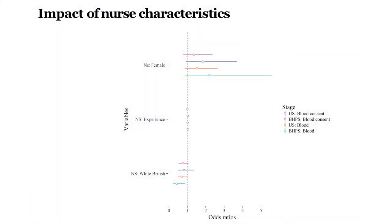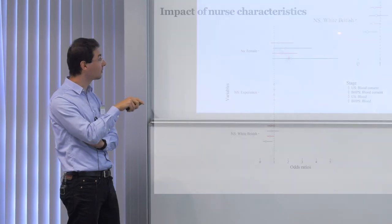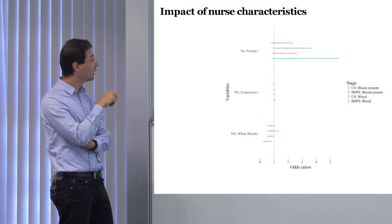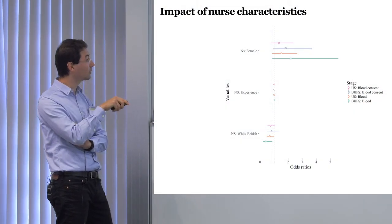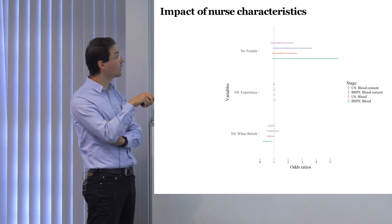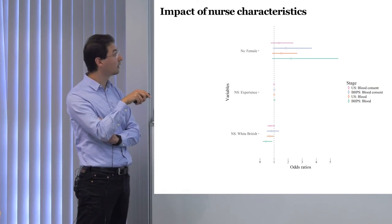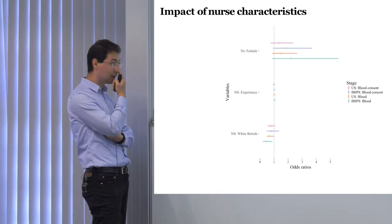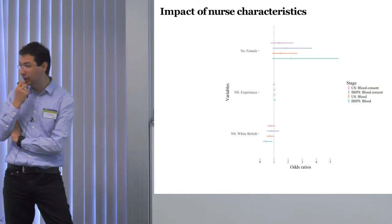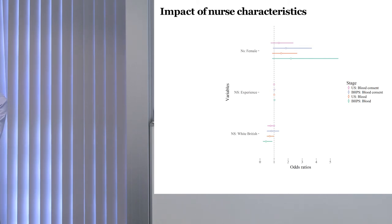Looking at nurse characteristics for blood consent and blood collection in Understanding Society and BHPS: female is not significant, experience is also not significant, and the only significant finding is for being white British — nurses who are white British have lower chances of collecting blood in both Understanding Society and BHPS. That's the only significant effect we found with nurse characteristics.